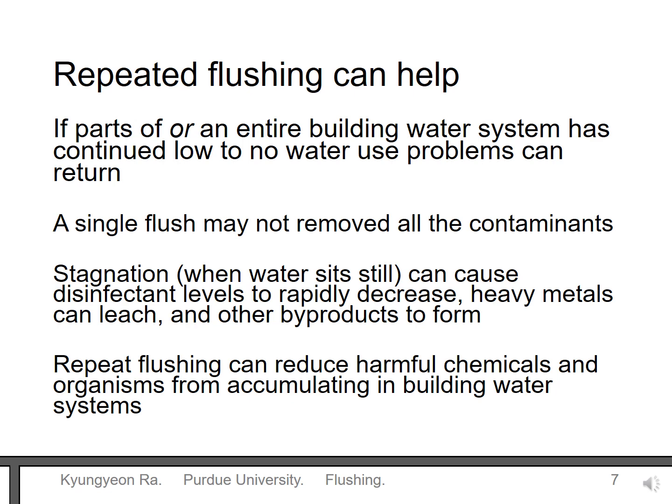In previous slides, I mentioned you could do repeated flushing. Repeated flushing can be used when buildings have low occupancy or are not occupied. If water gets old, the water may become unsafe. Also, as you just saw in the animation, one-time flushing may not remove everything in pipes, especially when the building is closed for a longer time and there are more contaminants in the pipe. So we recommend repeated flushing to maintain water quality in the building.